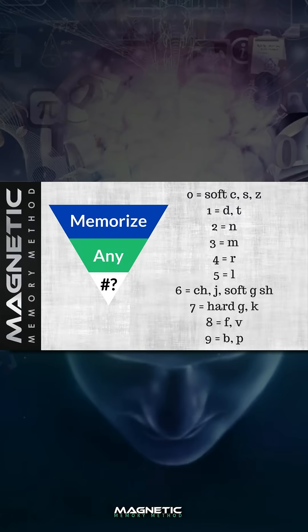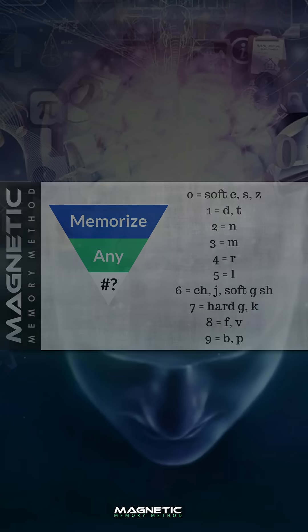But in today's world, basically what we do is we have zero associated with a soft C, S, or Z; one with a T or D; two with an N. You can just pause the screen to see the whole system the way that I use it, and how it gets me to be able to rapidly memorize something from a book like this.